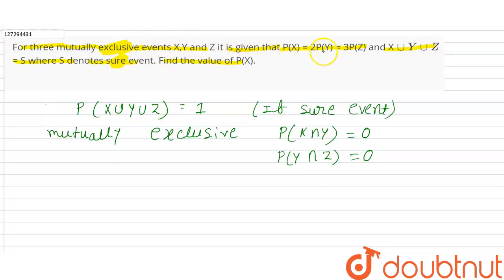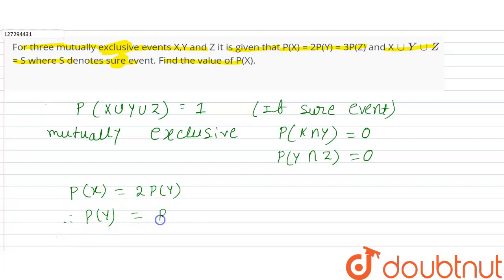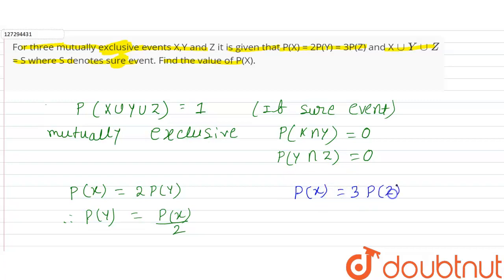We will find the probability using P(X) equals 2P(Y) equals 3P(Z). So P(Y) equals P(X) by 2, and P(Z) equals P(X) by 3.